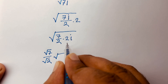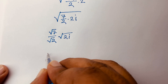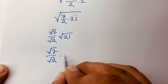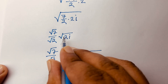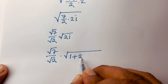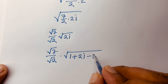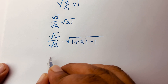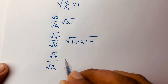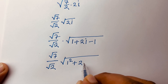Then I can see it will be square root of 7 over square root of 2, times square root of 2i. Now I add 1 and subtract 1 inside, so it becomes square root of 7 over square root of 2, times square root of 1 plus 2i minus 1.